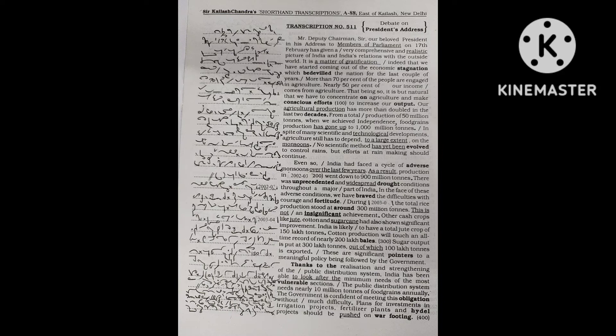During 2003-4, the total rice production stood at around 300 million tons. This is not an insignificant achievement. Other cash crops like jute, cotton, and sugarcane had also shown significant improvement.